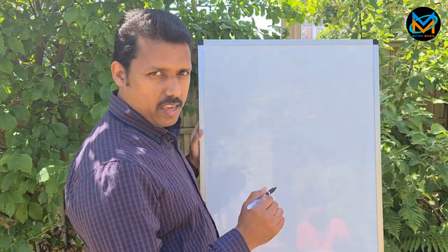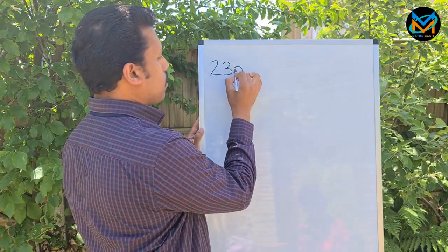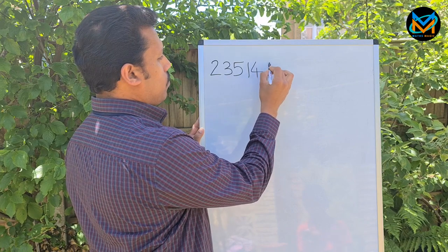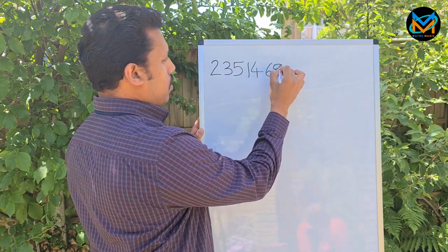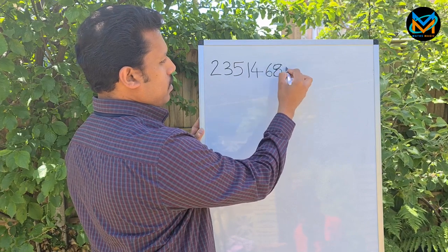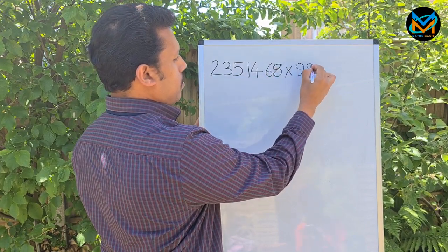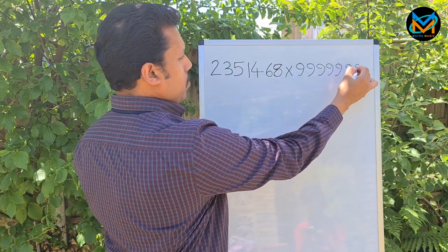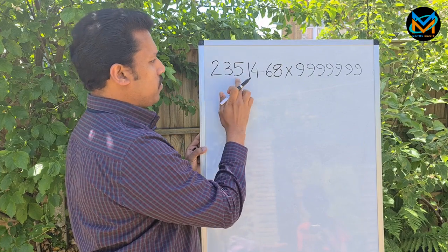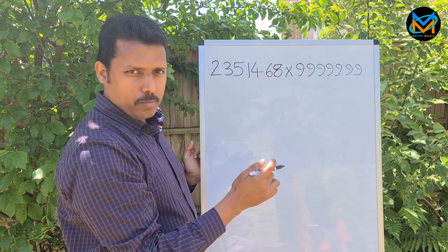First of all, before I come back to the trick, let's see this. Check this number - there are three, four, five, six, seven digits and I've got seven nines.